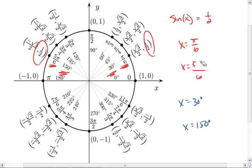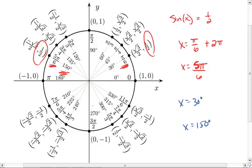But we're not just limited to those two solutions — these are the two distinct solutions. What we also need to realize is we could go an entire circle and then stop at pi over 6, and that would give us pi over 6 plus 2 pi. Or we could go two full rotations and then stop at pi over 6. Basically, we can go as many 2 pi's as we want, so we're going to add 2 pi times n, where n is an integer.